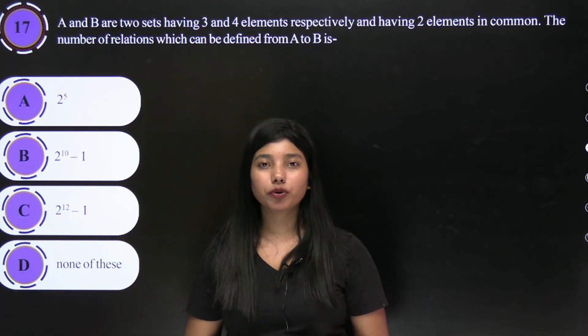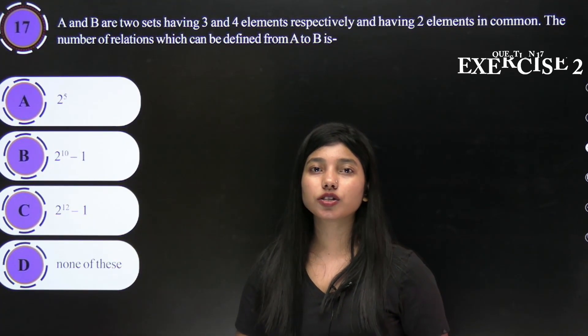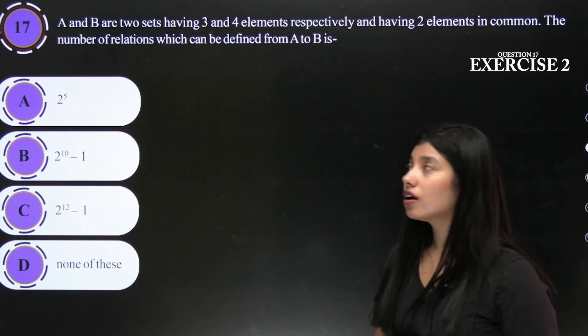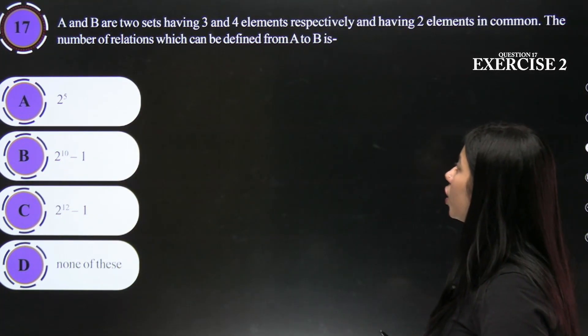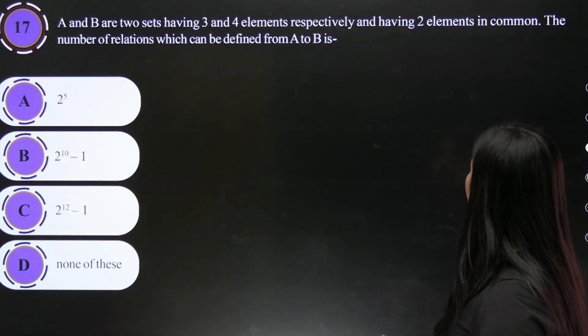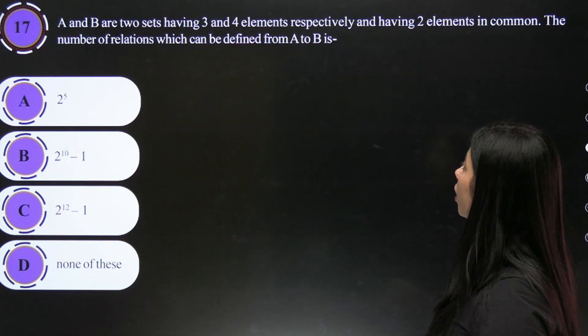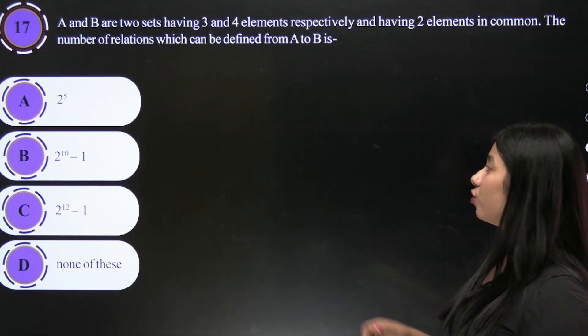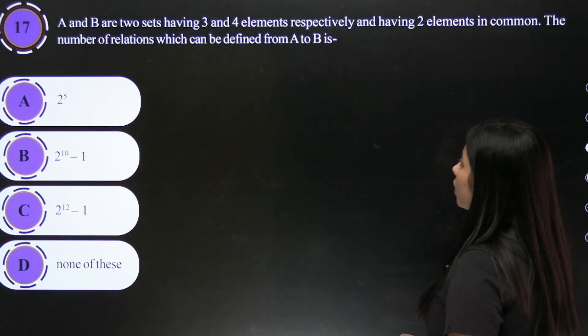Hello dear students, welcome to Best Approach. Today we will solve Exercise 2, Question Number 17. The question states: A and B are two sets having 3 and 4 elements respectively and having 2 elements in common. The number of relations which can be defined from A to B is...